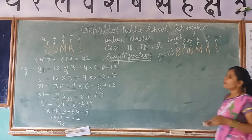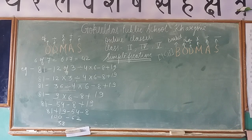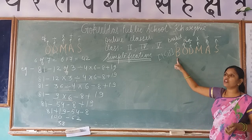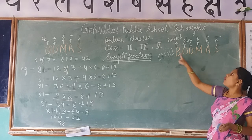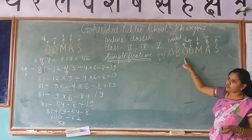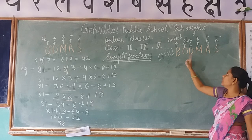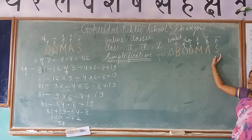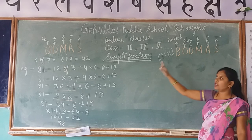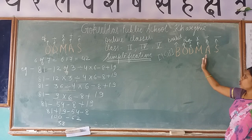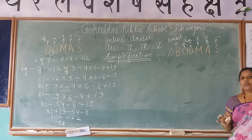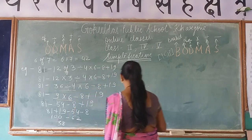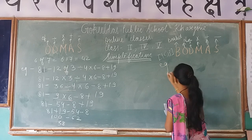In the BODMAS rule: B stands for Bracket, O stands for Of, D stands for Division, M stands for Multiplication, A stands for Addition, and S stands for Subtraction. Our first preference is Bracket, then Of, then Division, Multiplication, Addition, and finally Subtraction. The only new addition compared to ODMAS is that brackets are solved first. Let me solve one example of BODMAS.